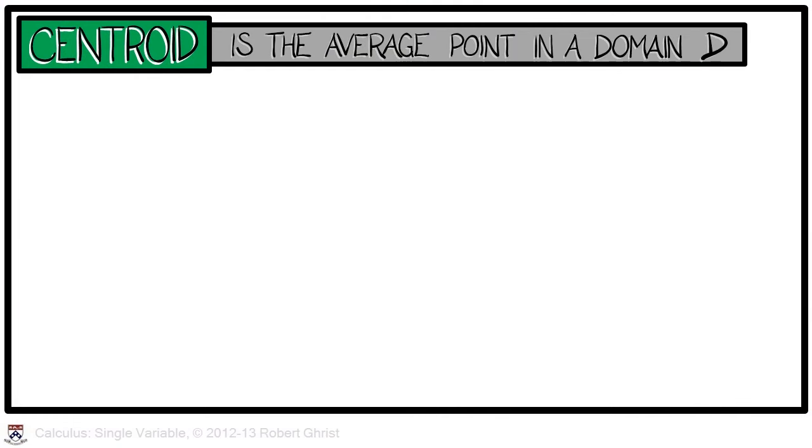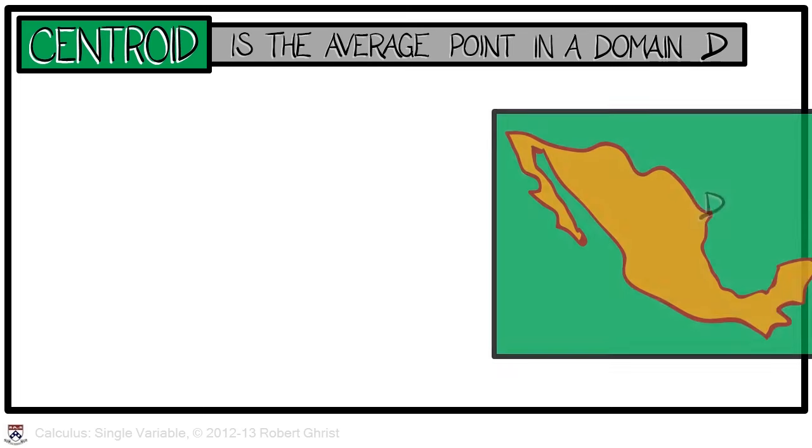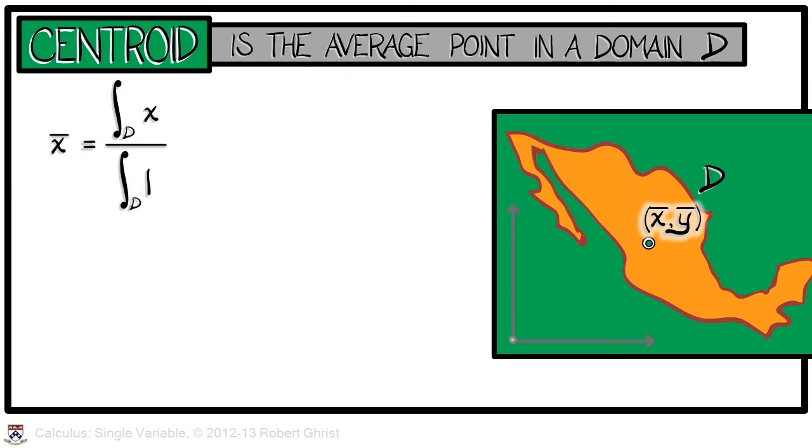That's exactly what we'll do in defining the centroid as the average location in a domain D. In this case, if we set up x and y coordinates, then we would characterize the centroid in terms of its coordinates, x bar and y bar. That notation is chosen to help you remember the definition. X bar is the average x coordinate over the domain. That is, the integral of x over D divided by the integral of 1 over D. Y bar, correspondingly, is the integral of y over D divided by the integral of 1 over D. In higher dimensional settings, I bet you can guess what the formula is.